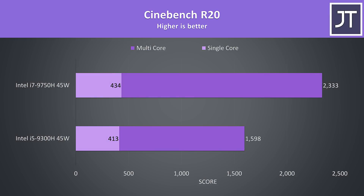That's it for gaming. Let's move onto the productivity tests starting with Cinebench R20. I've got the quad core i5 down the bottom and the 6 core i7 up top. The multi core test is obviously ahead on the i7 — it's got 50% more cores, and as such is scoring 46% higher over the i5.